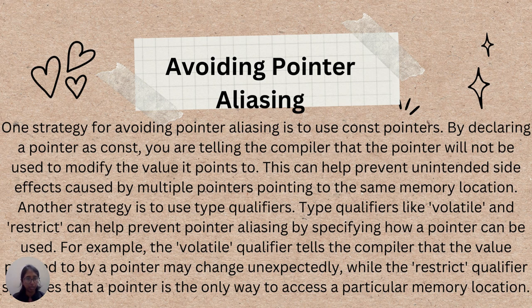Another strategy is to use type qualifiers. Type qualifiers like volatile and restrict can help prevent Pointer Aliasing by specifying how a pointer can be used. For example, the volatile qualifier tells the compiler that the value pointed to by a pointer may change unexpectedly, while the restrict qualifier specifies that a pointer is the only way to access a particular memory location.